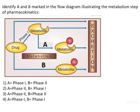Identify A and B marked in the flow diagram illustrating the metabolism step of pharmacokinetics. They have given a metabolism image and asked which is the phase. A drug is being metabolized into a metabolite and then excreted. They are asking you to identify whether A and B are phase 1, phase 2, or interchanged. Before evaluating the answer, let us understand the basics of metabolism.